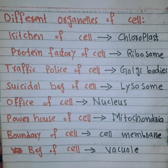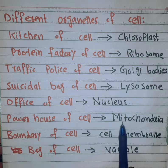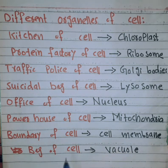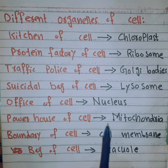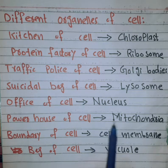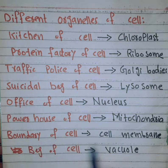Energy is needed for the mitochondria. ATP is produced by the mitochondria. The mitochondria is the powerhouse of the cell, providing energy for all cell functions.